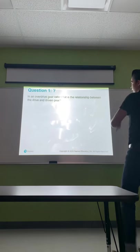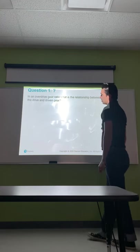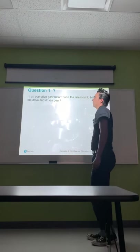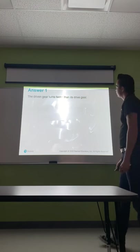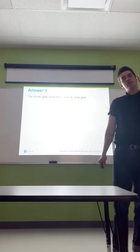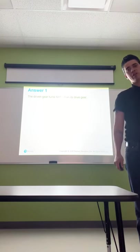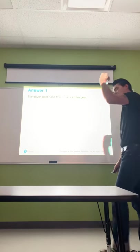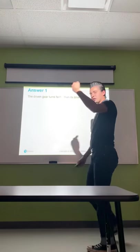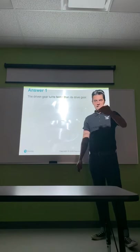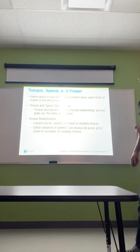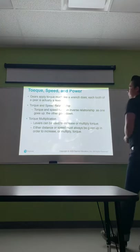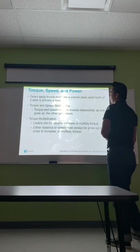In an overdrive gear ratio, the driven gear turns faster than the drive gear — the drive gear rotates slower while the driven gear spins faster. Gears apply torque much like a wrench does; each tooth of a gear is essentially a lever.